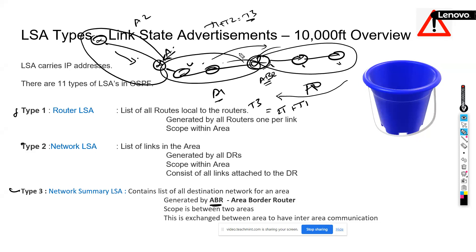There is a condition in OSPF saying all non-backbone areas should have direct connectivity with the backbone area. This is why area 2 connected only to area 1 — without touching area 0 — will have no reachability.